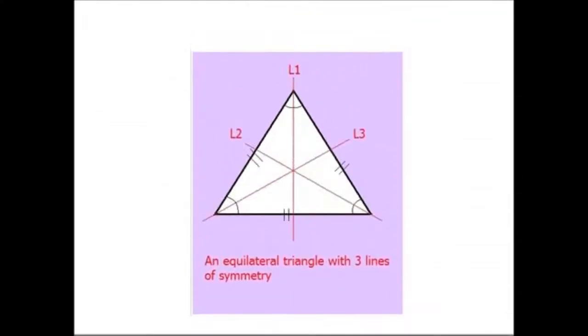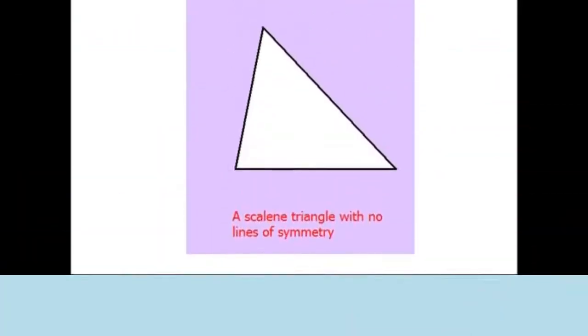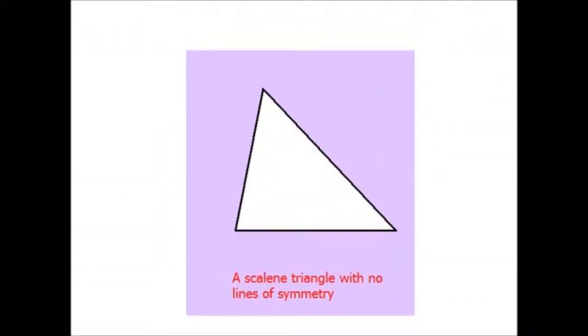An equilateral triangle has three lines of symmetry: line 1, line 2, and line 3 can form mirror images of this triangle. An isosceles triangle in which two angles are equal has one line of symmetry. A scalene triangle in which no angles are equal has no lines of symmetry.